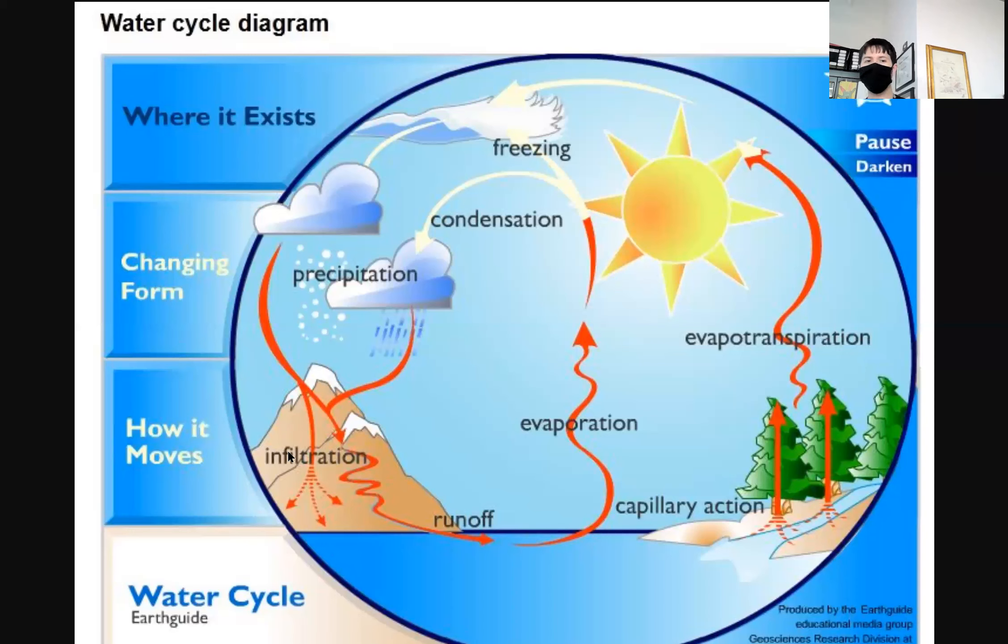Now, the funny thing about infiltration is that even though it's soaked up at the ground, eventually that water will find its way back to a water source because that water doesn't just stay on the ground. It actually sinks through the ground and finds its way back to a river or an ocean. It might take a hundred years, but it'll eventually find its way back.